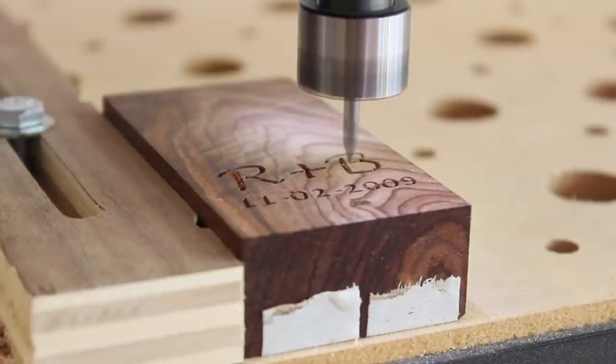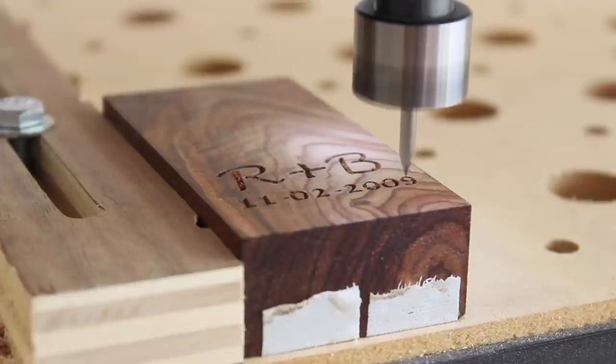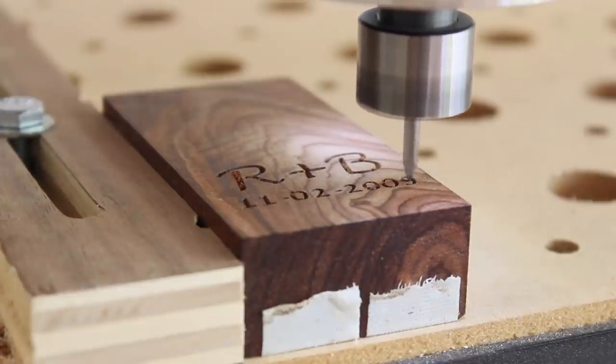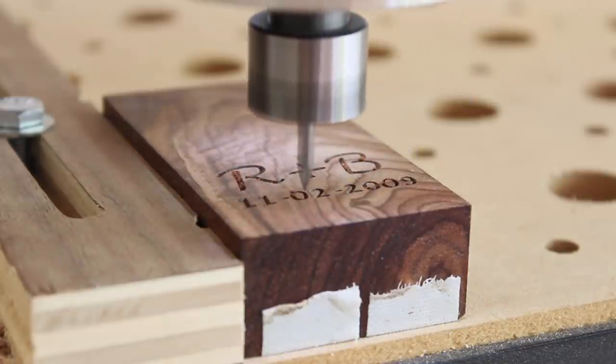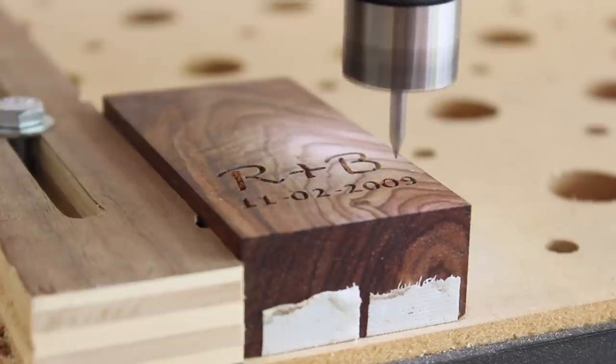The CNC comes in handy when I want to do a custom engraving like this. I'm doing a pretty simple V-carving operation, and this is a 1/8 inch V-bit with maybe a 45 or 60 degree angle. This is just my friend and his fiancée's initials along with their original anniversary.